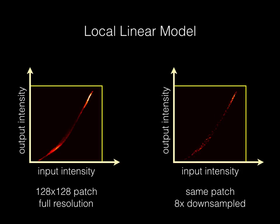We fit the curve by dividing the intensity range into bins and fitting a line per bin. To apply the curve, we take the input intensity and linearly interpolate between the two nearest line fits. This effectively yields a quadratic spline.